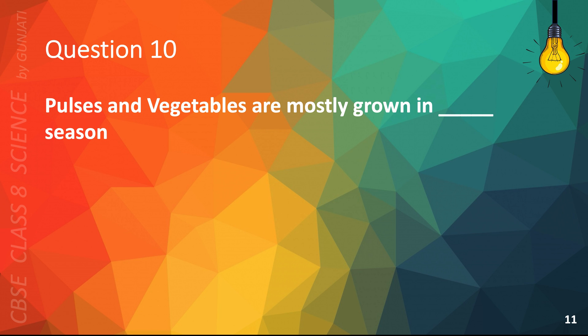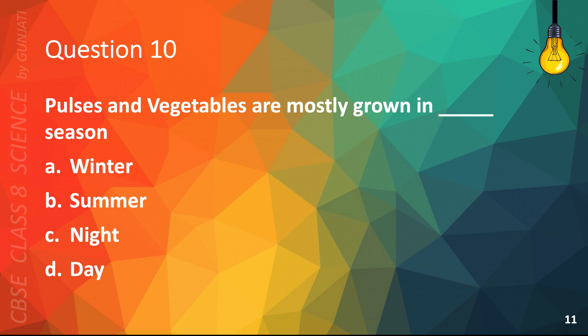Question 10. Pulses and vegetables are mostly grown in blank season. A. Winter, B. Summer, C. Night, or D. Day. The correct answer is B. Summer.